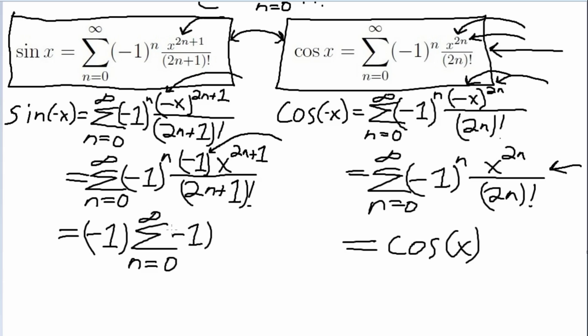So again, we have our negative 1 to the nth power and x being raised to the 2n plus 1, and again dividing by 2n plus 1 factorial. And what do we have here? That is just the analytic definition of sine.